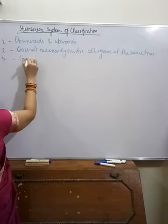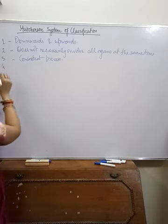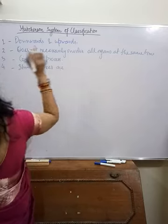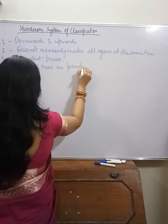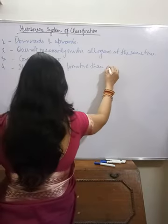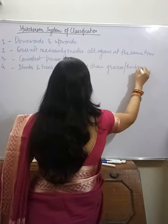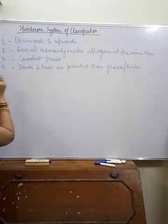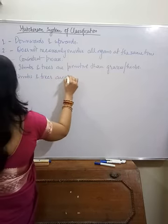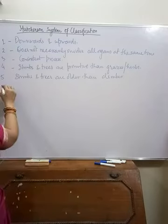The fourth principle is that broadly, shrubs and trees are more primitive than grasses or herbs in any one genus or family. The fifth principle is that shrubs and trees are older than climbers.